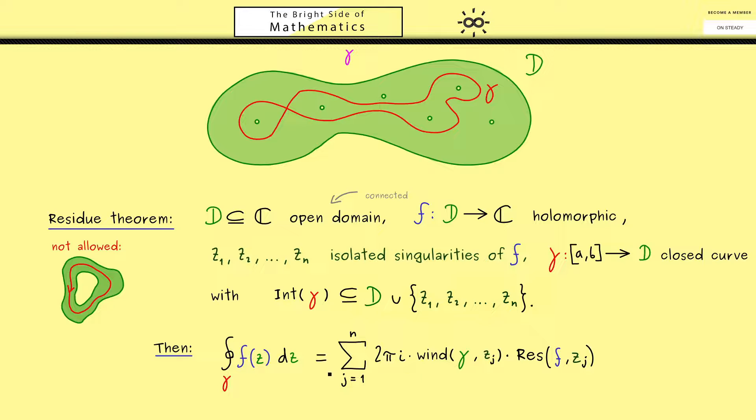So in other words we simply sum up all the residues weighted with the winding numbers. So you see the residue theorem tells us that if we know the residues of the function we can calculate a closed contour integral.